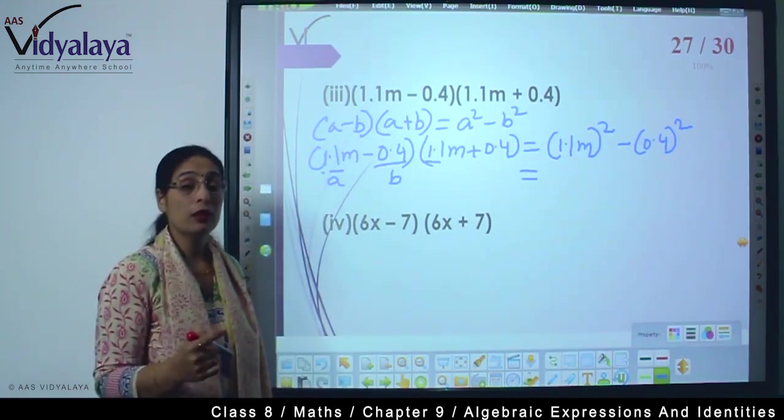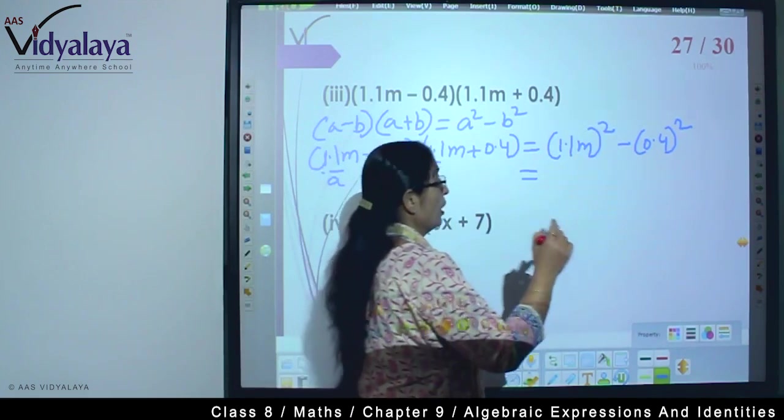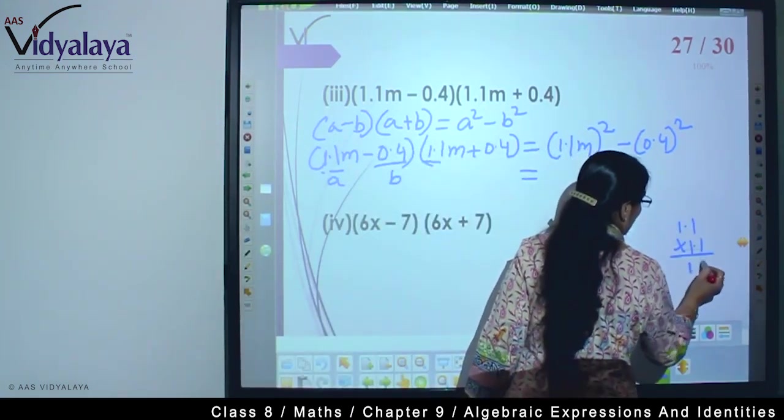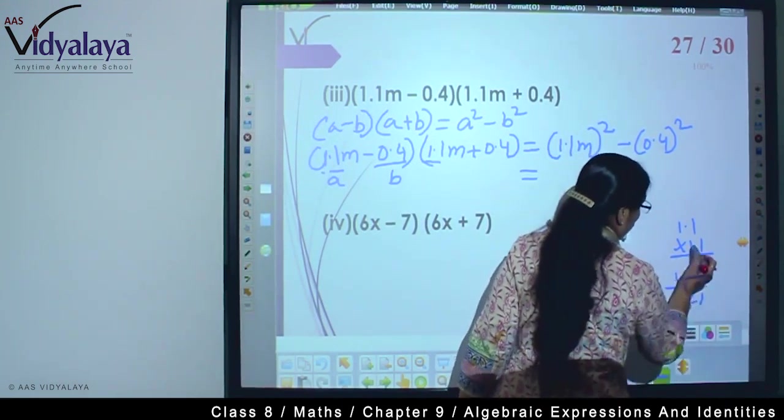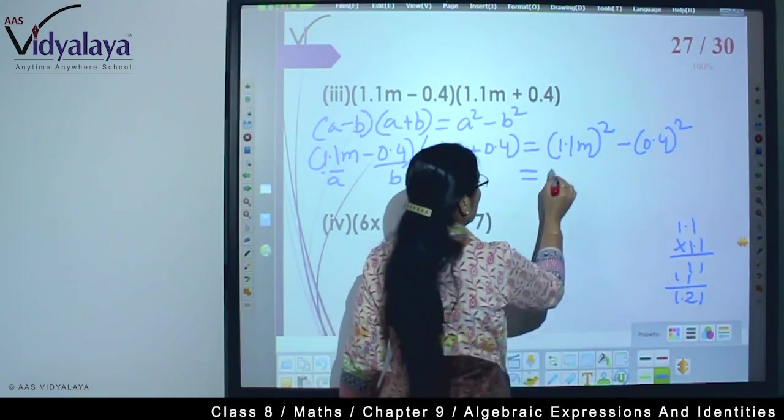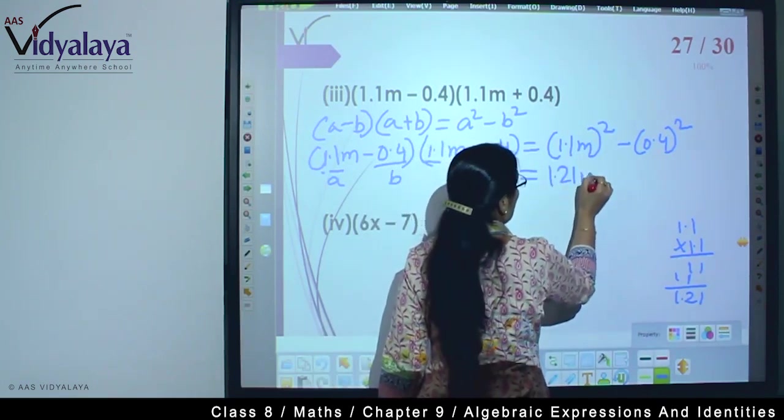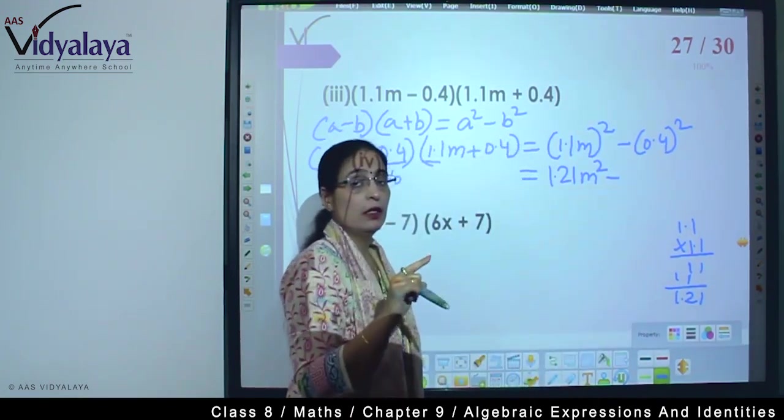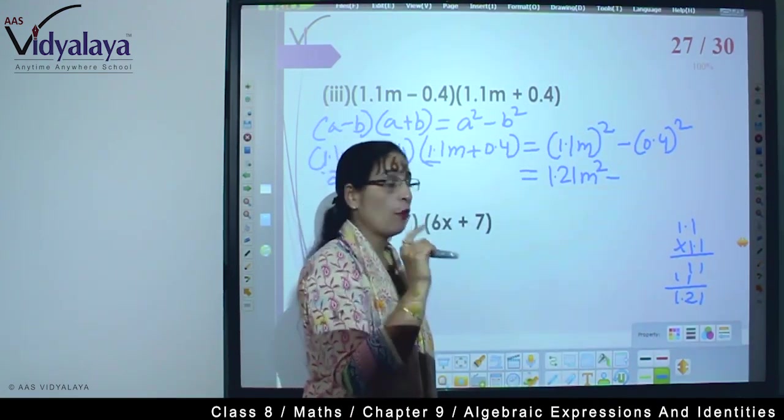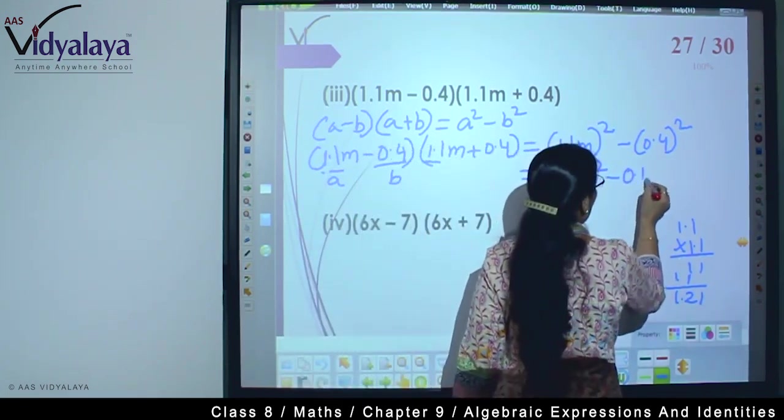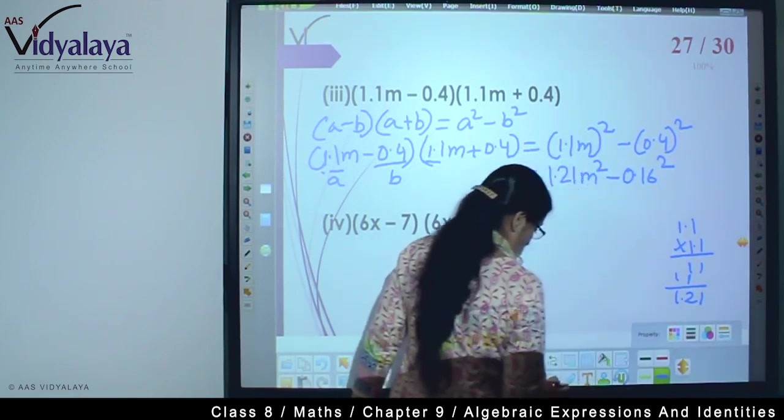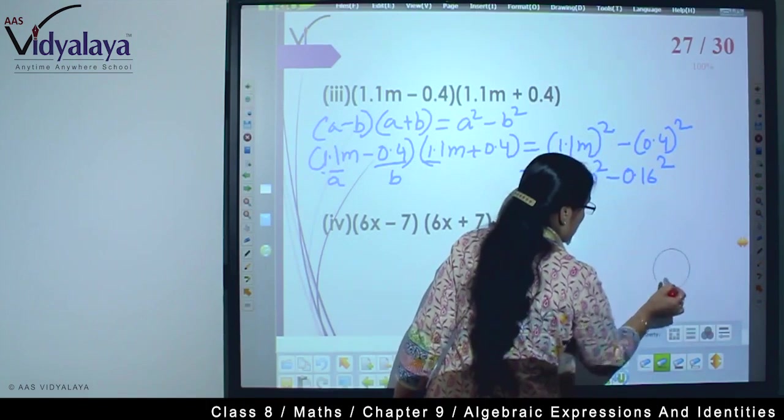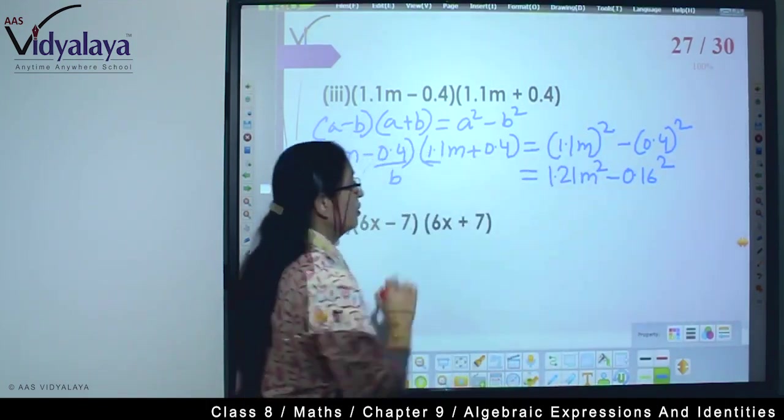Okay, now 1.1 times 1.1 is how much? 11 times 11 is 121. So 1.1 - if you have any confusion, do it this way: 1.21, two decimal places. So 1.21m² minus - this is 4×4=16. Two decimal places here, so 0.16². Clear?